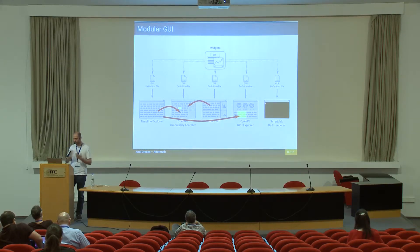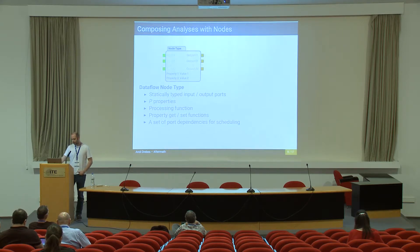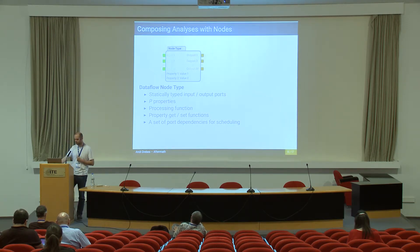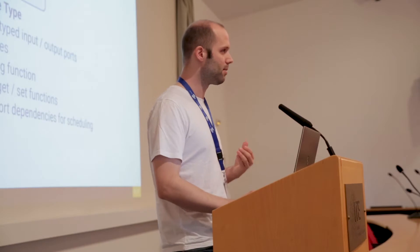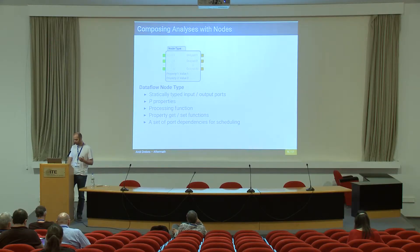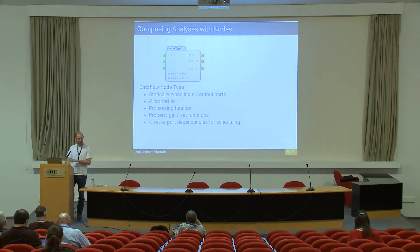The idea is that you can go from one tool to another dynamically. For the custom analysis, I need to talk about the nodes and graphical system we propose. A node type is just a set of statically typed input and output ports — which you see on the left and right hand side in the figure — a set of properties that can be set by the user which configure how the node reacts, and a processing function that defines what the node does when it is evaluated. Finally, we have property get and set functions to react to user changes, and a set of port dependencies for scheduling.